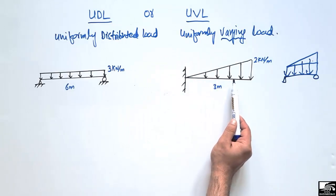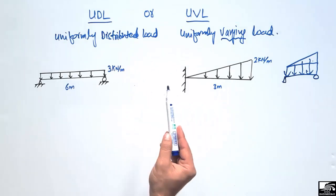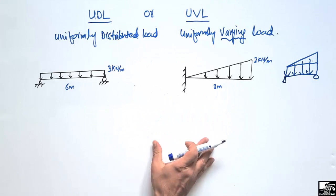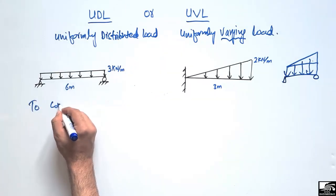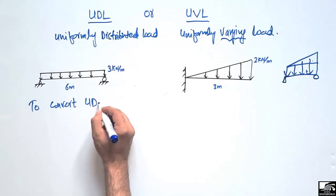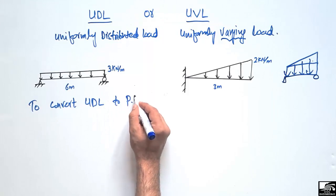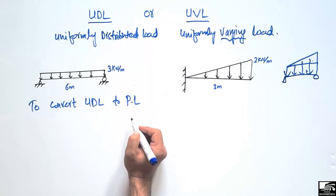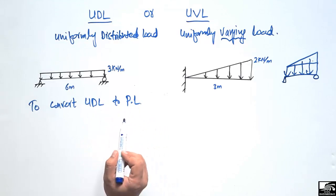When there is a uniformly varying load acting on the cantilever beam, we need to know how to convert such loads into a pointed or concentrated load. To convert a UDL into a pointed load — where PL means pointed load, which is a concentrated load — we use the following formula.